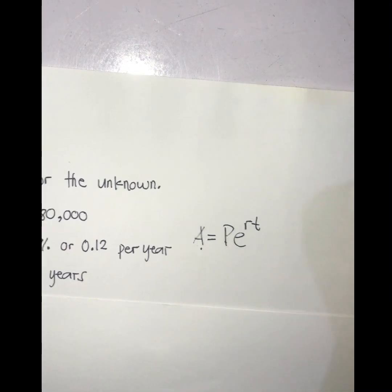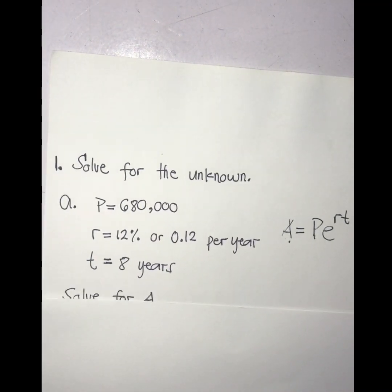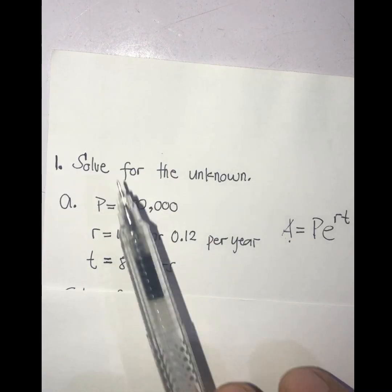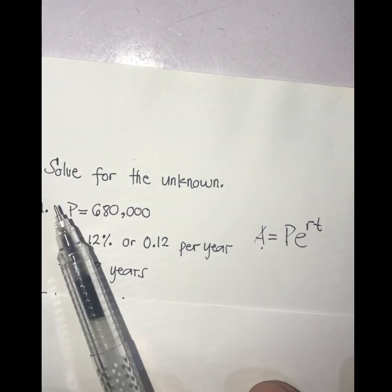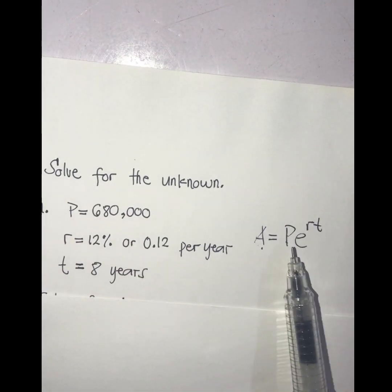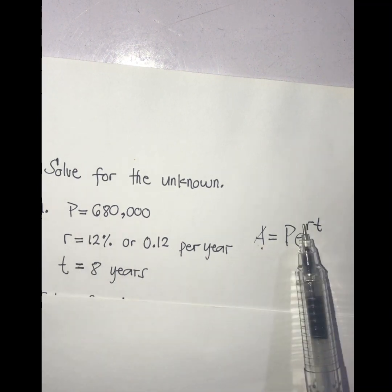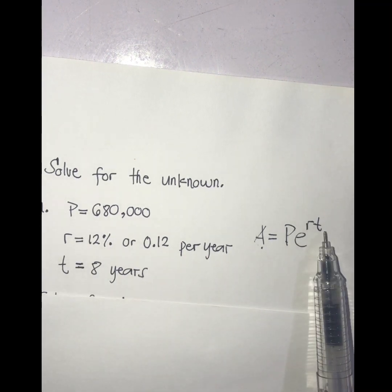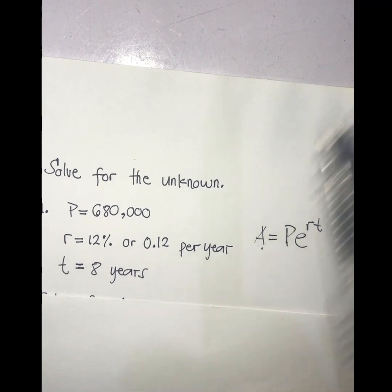Let's move forward. As you can see here from the given, we have already the P, we have the value of P, we have the value of R, and the value of T. All we need to find here is the value of A.